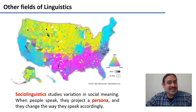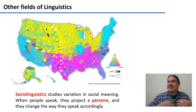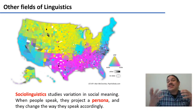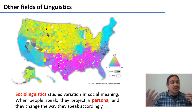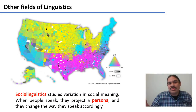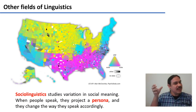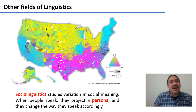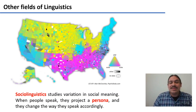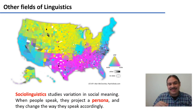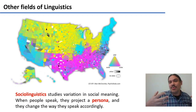Another field of linguistics is sociolinguistics. It studies how people project a persona or identity to the world. This identity determines what kinds of words you use, and even what sounds go into different words. A simple example is the word for a fizzy drink in the United States: it's called 'soda' in some regions, 'pop' in others, and 'coke' in others. Depending on where you're from, you'll use one word for it, and this becomes part of the persona you want to project.